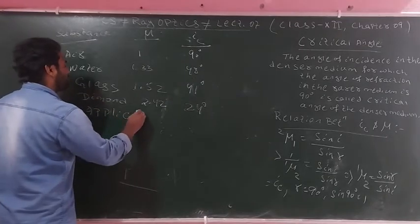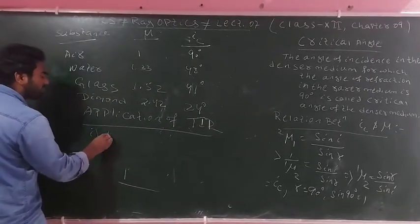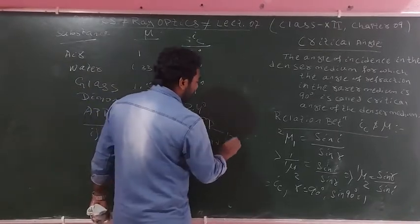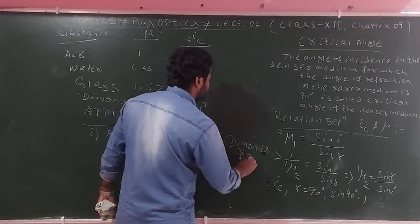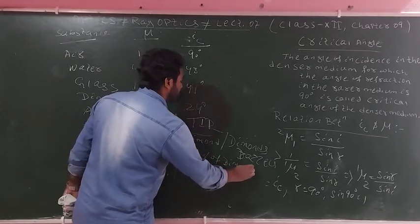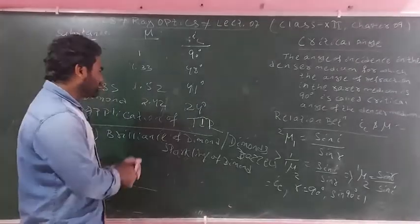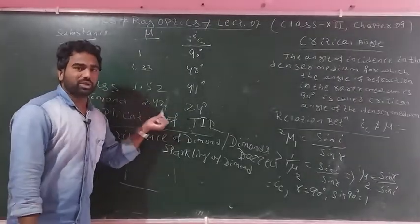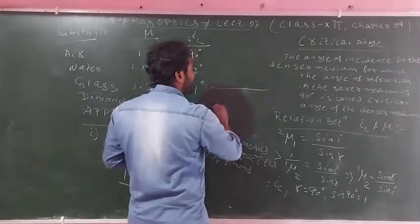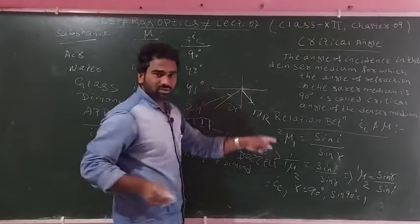Now we discuss applications of total internal reflection. The first application is the brilliance and sparkling of diamonds. Diamond has the highest refractive index of 2.42, and its critical angle is very small — only 24 degrees. Because the critical angle is so small, light undergoes total internal reflection multiple times inside the diamond before exiting, causing its characteristic sparkle.